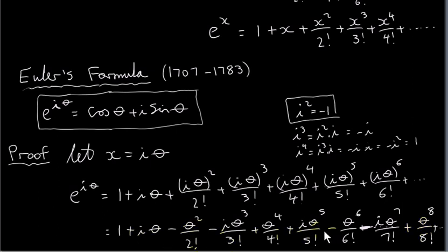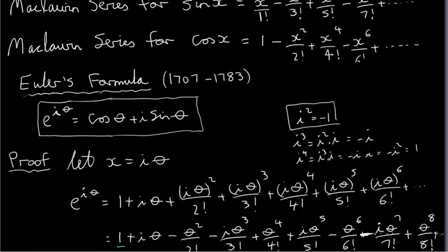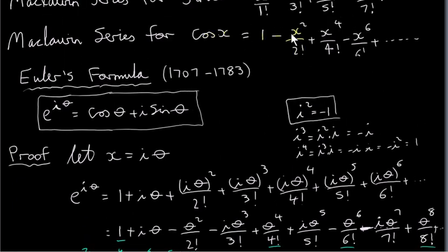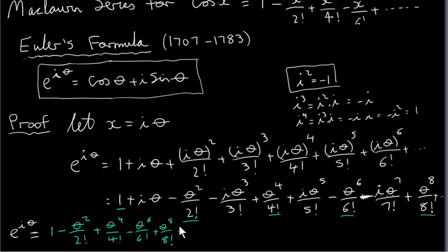Now, if we look at this series, we can break it up into real and imaginary parts. The real part involves terms that do not contain i. Underlining those terms, we have 1 minus theta squared over 2 factorial plus theta to the 4 over 4 factorial minus theta to the 6 over 6 factorial plus theta to the power of 8 over 8 factorial, etc. You can see there's a pattern here and it looks exactly like the Maclaurin series expansion for cos of x, if we replace x with theta. That is indeed what it is — that's the real part of this infinite series.